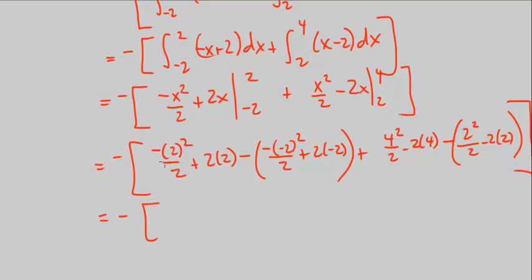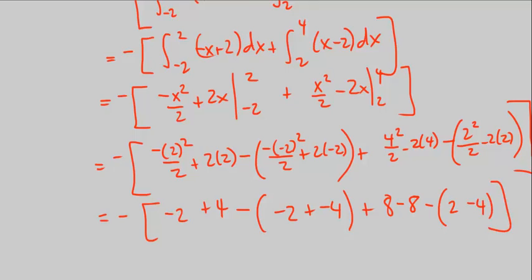So then we have negative 2 squared, so that's negative 4 over 2 is negative 2, plus 2 times 2 is 4, minus negative of 2 squared over 2 is 4, negative 4 over 2 is negative 2, plus negative 4, this is negative 4, plus 4 squared is 16 over 2 is 8, minus 8, minus 2 squared is 4 over 2 is 2, minus 4.